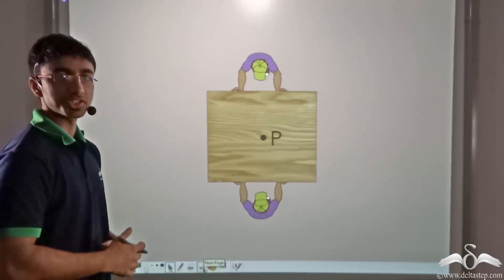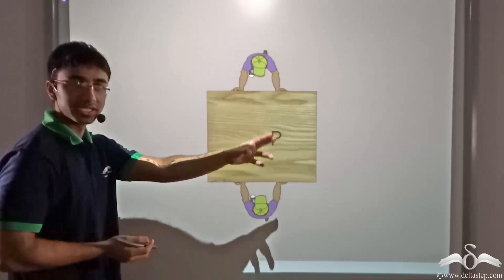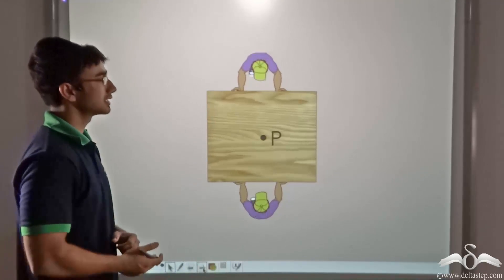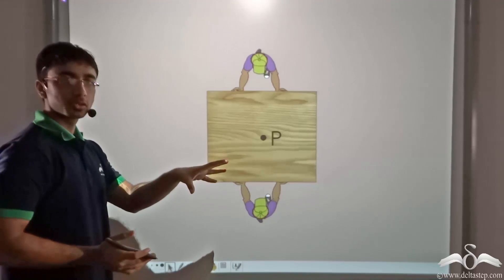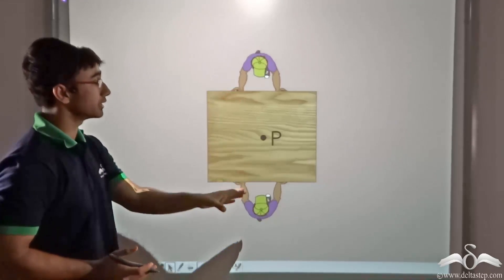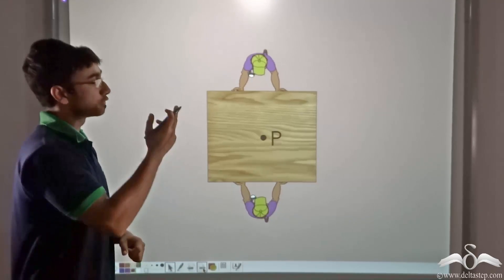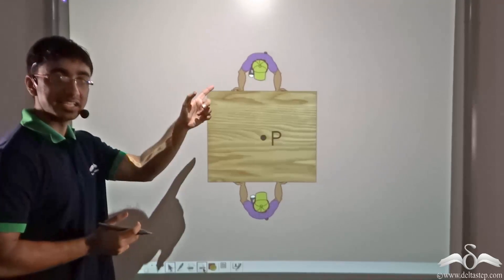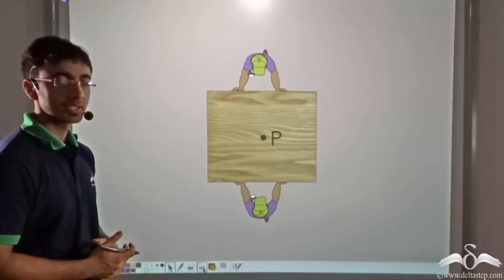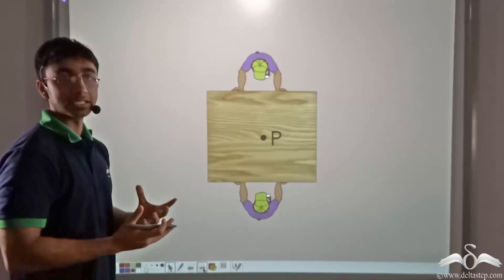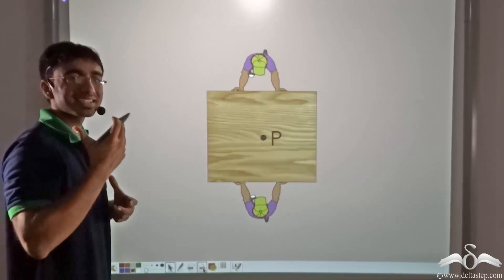Consider this animation. P denotes the center of a wooden table, and two boys are trying to push the table from both ends. They are standing exactly opposite to one another and applying the same force. Since these forces are in opposite directions, they cancel, and evidently the table does not move.